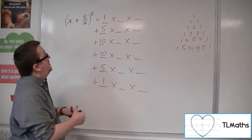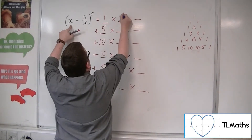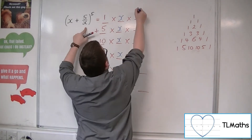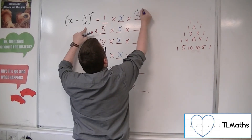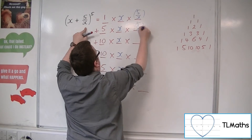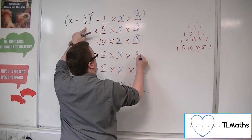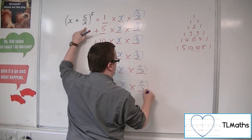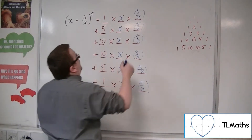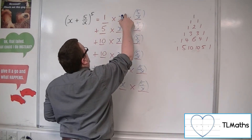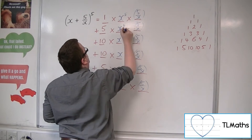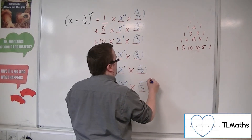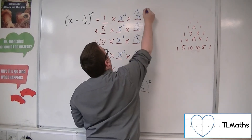Now my job is to fill out the rest. We're going to have x, x, x, x, x, x — and here we're going to have (5 over x), (5 over x), (5 over x), (5 over x), (5 over x), and (5 over x). Make sure it's in a bracket. Now let's have x decreasing in power: 5, 4, 3, 2, 1, 0. And (5/x) increasing in power: 0, 1, 2, 3, 4, 5.